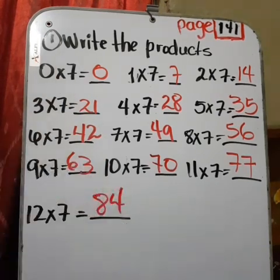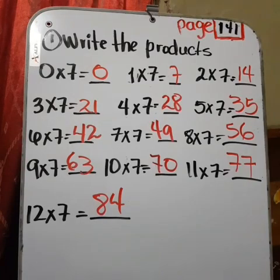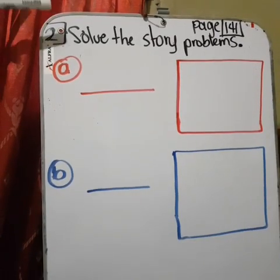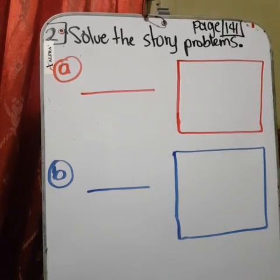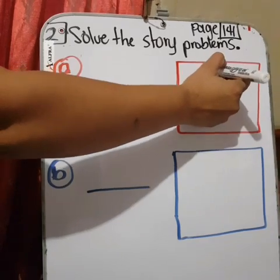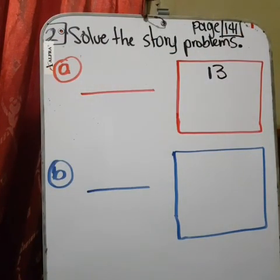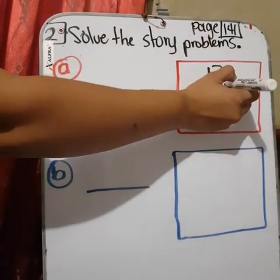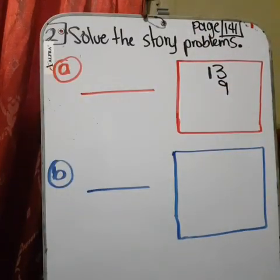Exercise two, solve the story problems. No lo escribí ahí porque lo van a leer junto conmigo. Joshua went, exercise A. Joshua went ice fishing with his dad on lake Winnebago, Wisconsin. His dad caught thirteen fish. How many fish caught that? Thirteen. You're going to write thirteen here.